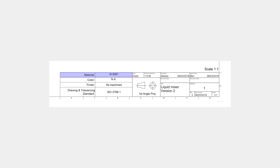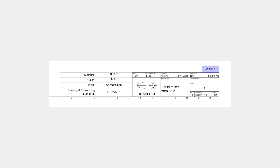First, the title block. It's essential for the information in the title block to communicate the part's primary function. It therefore contains basic information such as the part name, the material, the finishing and color requirements, the designer's name, and the company. It also contains technical information, including the scale of the blueprint and the standards used for dimensioning and tolerancing.